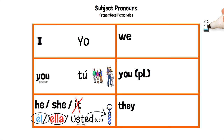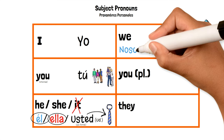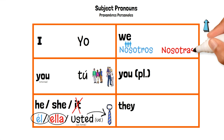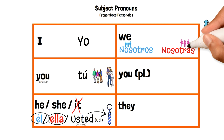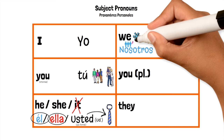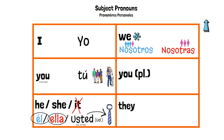Let's continue with the plural forms. To say we, we could say nosotros — if you are a group of males or you are a male — or nosotras, if you are a group of females and you are a female. Remember, we includes you. What if we have a mixed group? If we have a mixed group, we use the masculine form nosotros. The moment there is one male in the group, you use the masculine form.